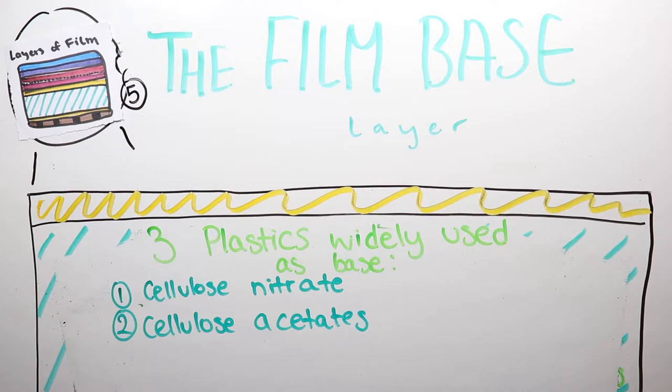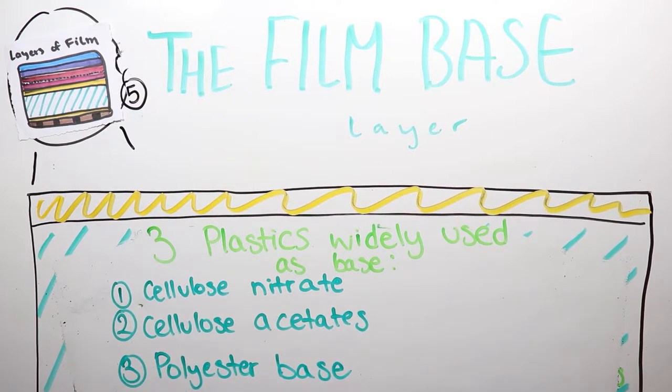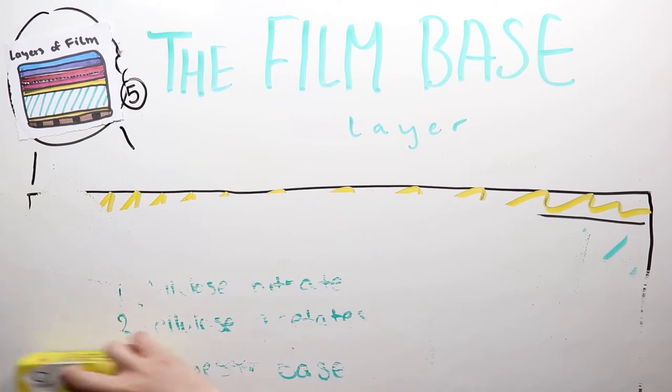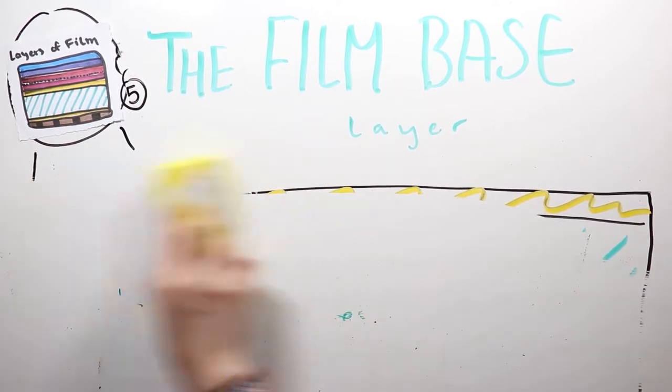Most current Kodak and Eastman motion picture films are coated on a cellulose triacetate base and polyester base, and these are used for all print films, most duplicating films, and some specialty films. Polyester is stronger and wears better than triacetate. Polyester's storage life is up to 10 times that of acetate.